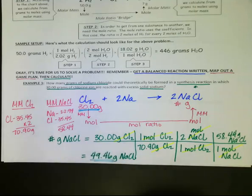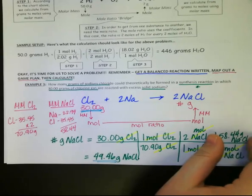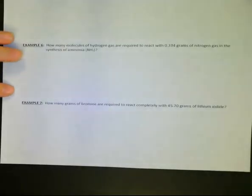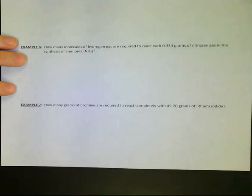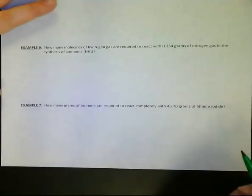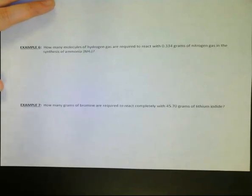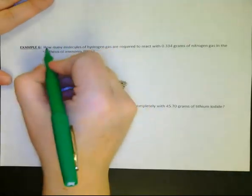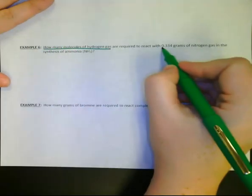All right, so you've got a one-step problem. Now we've done a grams-to-grams problem. Let's see if I can find a grams-to-moles kind of problem. Let's go do number six. So number six says, I need to know how many molecules of hydrogen gas are required to react with 0.334 grams of nitrogen gas in the synthesis of ammonia.